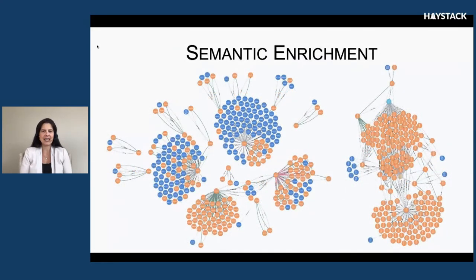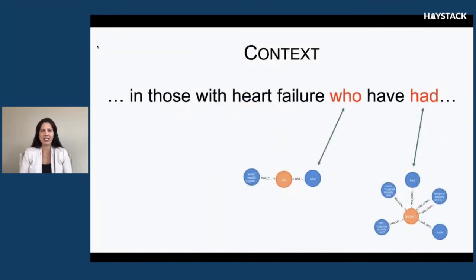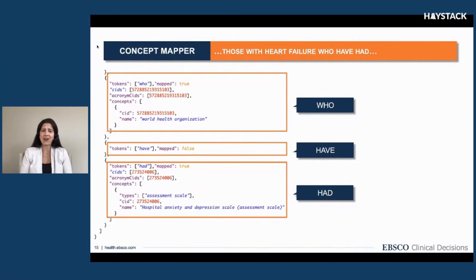We're taking large chunks of text and comparing them against a knowledge graph, so you can imagine some particular problems. The issues we encounter primarily are around acronyms. For example, in the snippet 'in those with heart failure who have had,' the terms 'who' and 'had' are actually correlated to acronyms in our graph — 'WHO' is defined as World Health Organization and 'HAD' as Hospital Anxiety and Depression. That's not the usage in this sentence, so although we've identified these as acronyms, we do not semantically enrich them. We have a set of rules to ensure we don't overly tag our content.